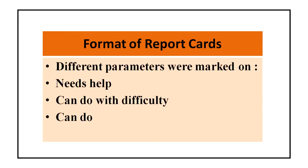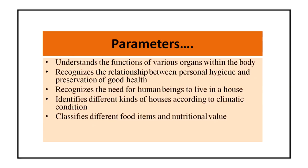There are different kinds of report card formats used by schools. In this presentation I will discuss three kinds of formats. The first format has different parameters marked on three levels: the child needs help, child can do but with difficulty, and can do. The parameters in this report card include: understands the function of various organs within the body; recognizes the relationship between personal hygiene and preservation of good health; recognizes the need of human beings to live in a house; identifies different kinds of houses according to climate condition; and classifies different food items and their nutritional value.